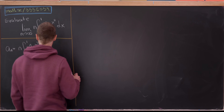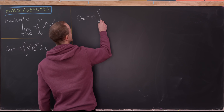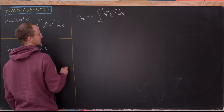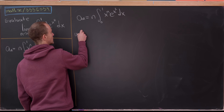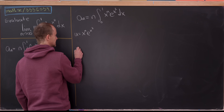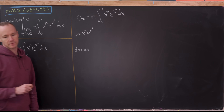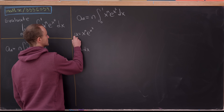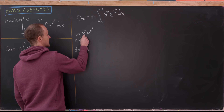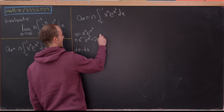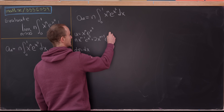Let's do our first round of integration by parts on this integral. We're going to set u equal to the entire integrand, so that'll be x to the n times e to the x squared, and then dv will simply be the dx term. Taking the derivative using the product rule gives us n times x to the n minus 1 times e to the x squared, plus 2 times x to the n plus 1 times e to the x squared dx.